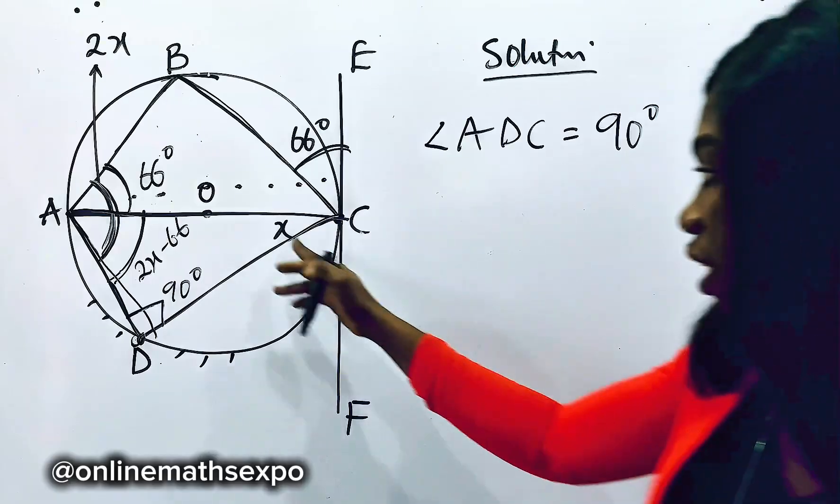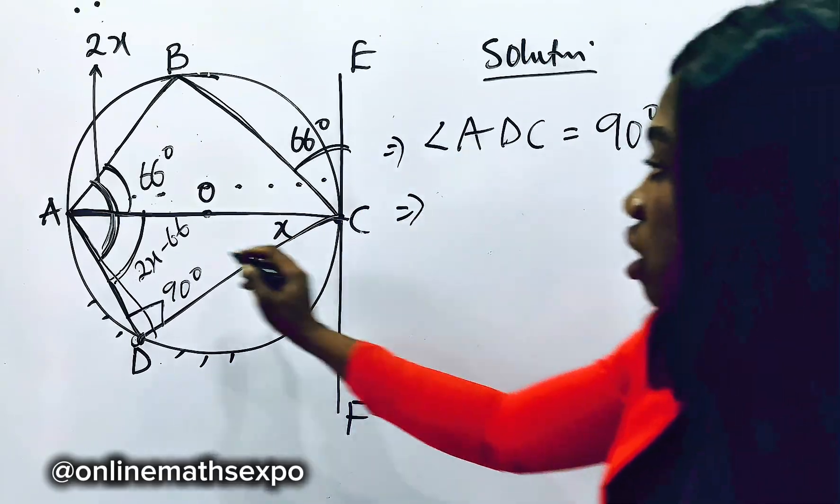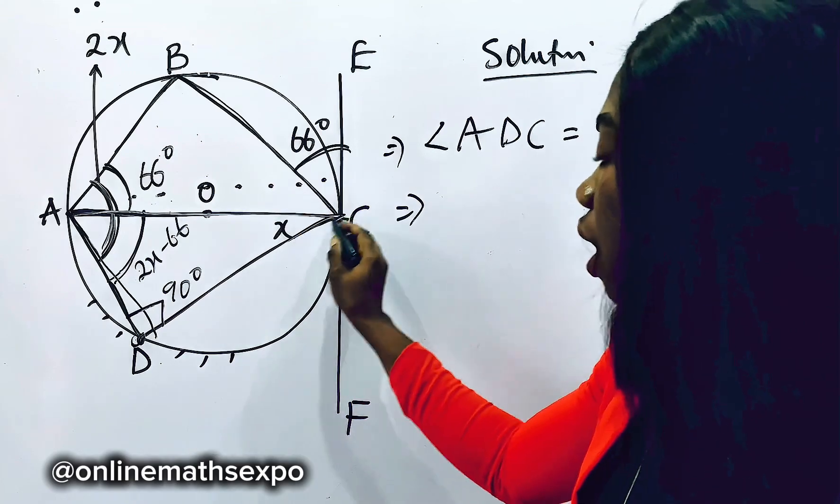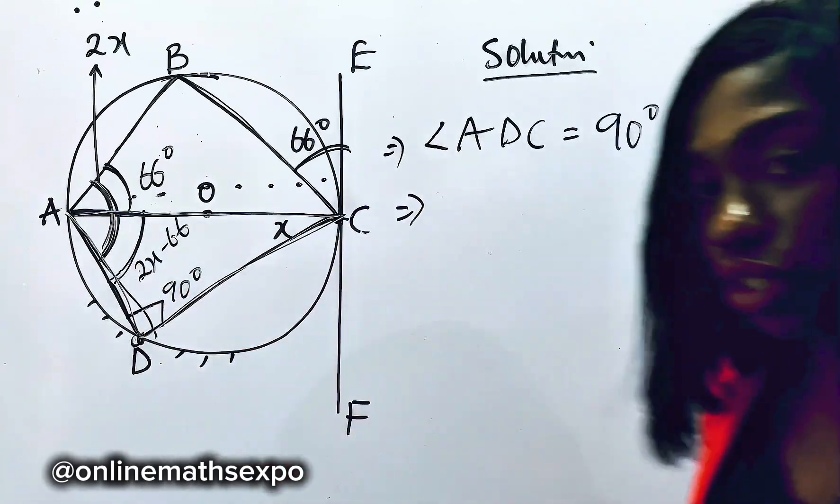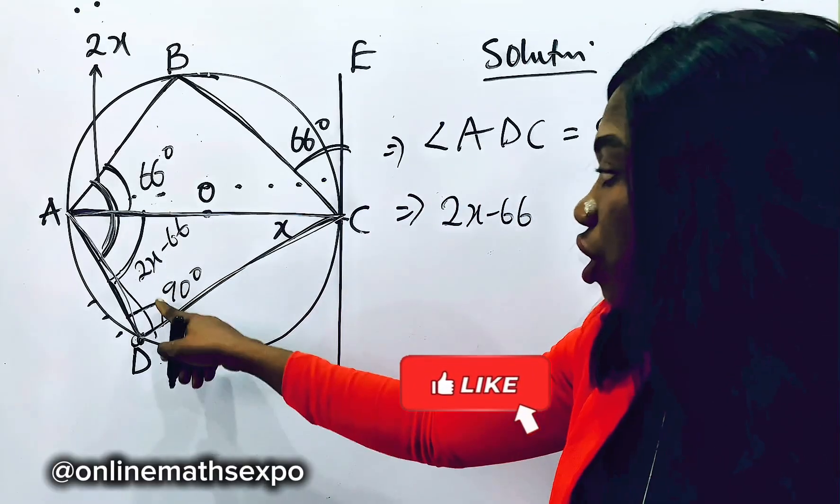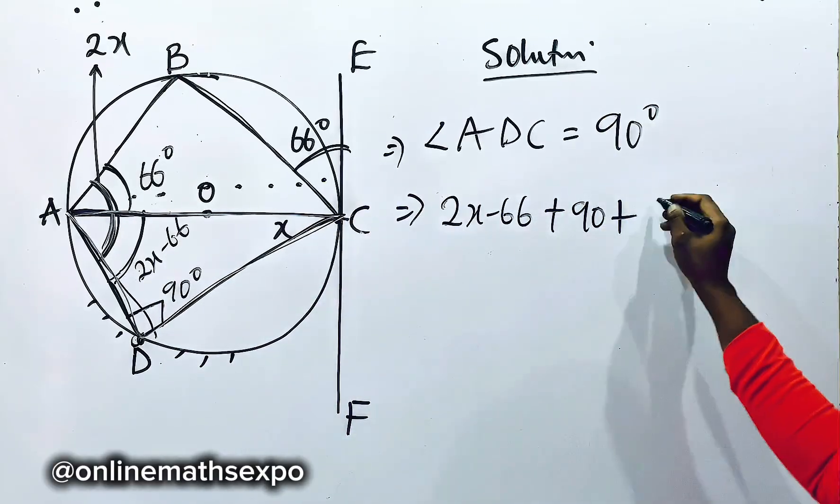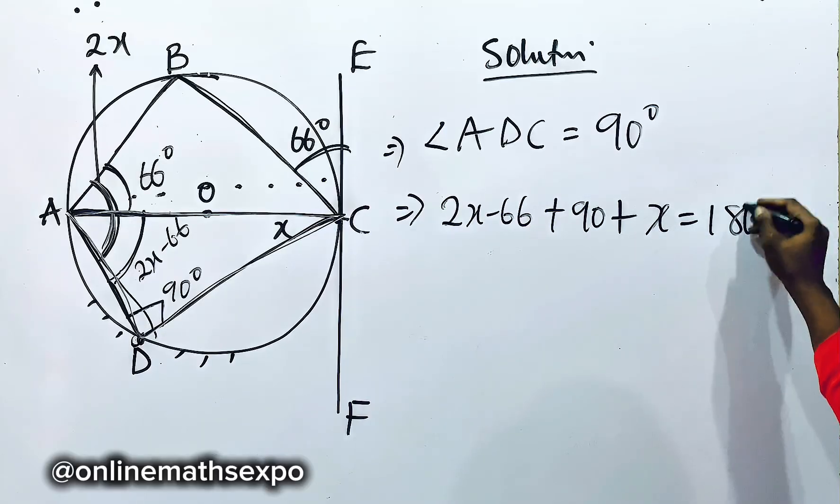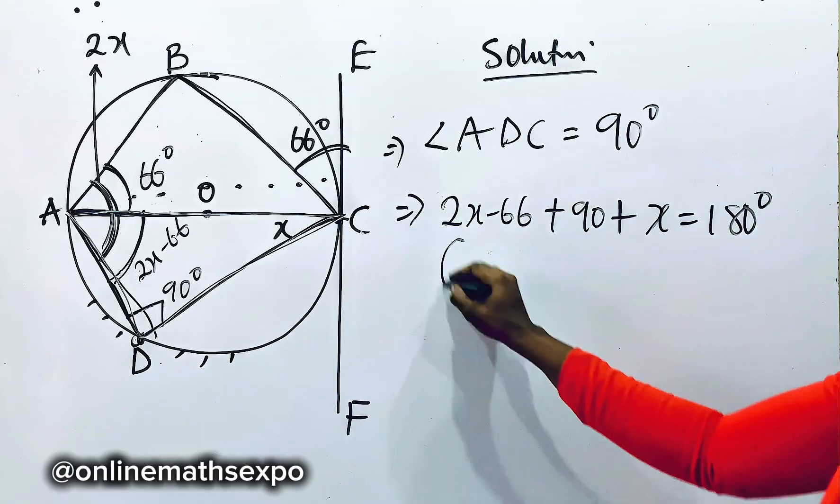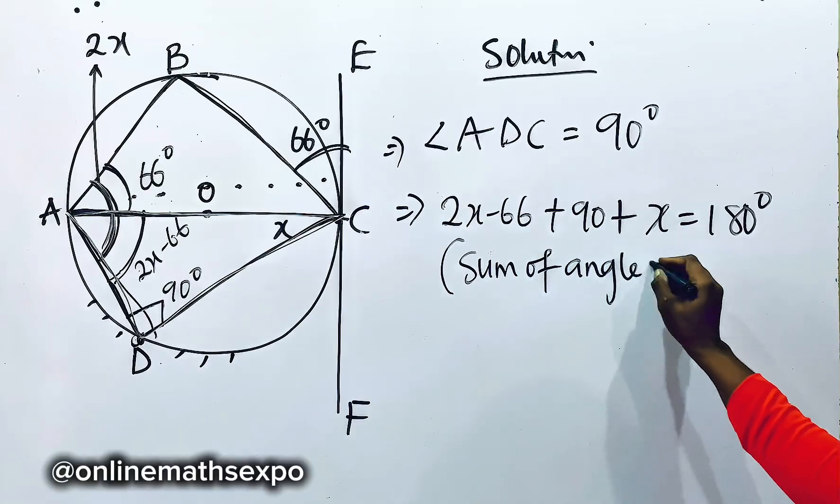And with this, we can now find the value of X. So we can have it that, remember, this has formed a triangle. And the sum of angles of a triangle is 180. So we bring the angles together. This is what we have. Bring this as 90. Then add this X and everything should be equal to 180 degrees.